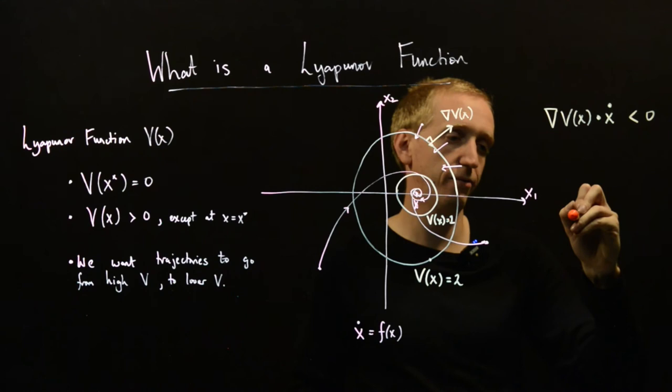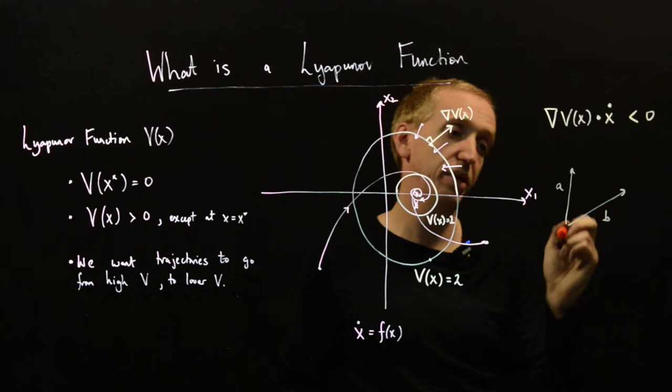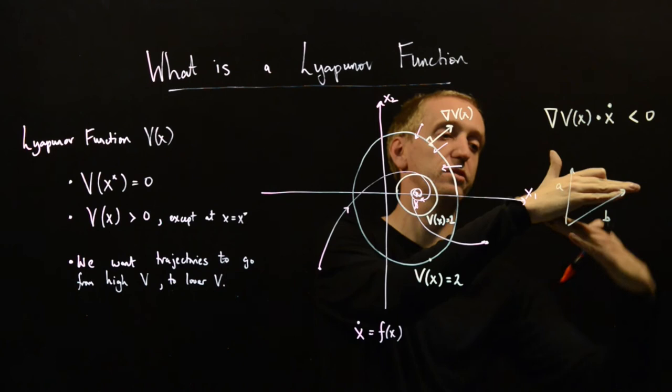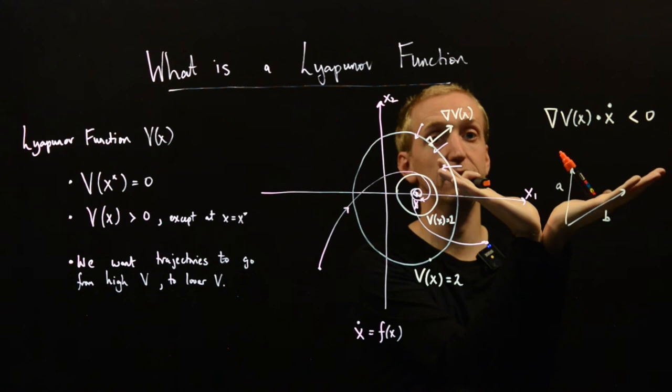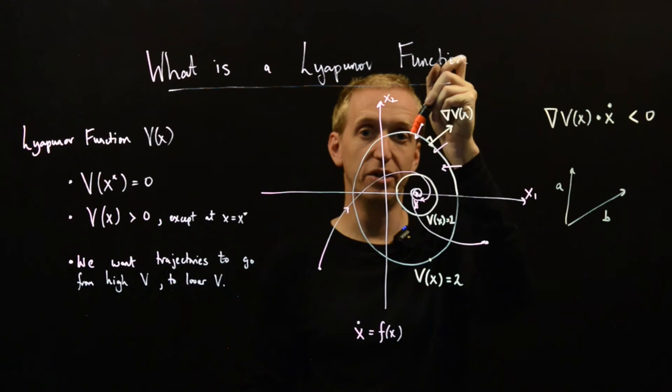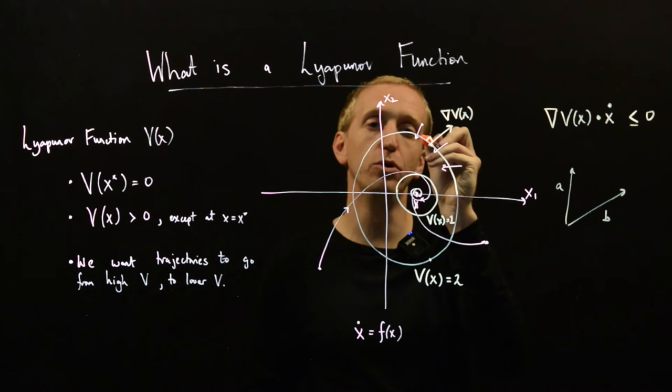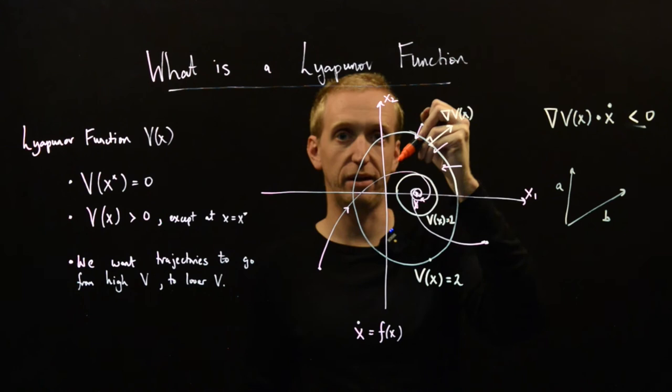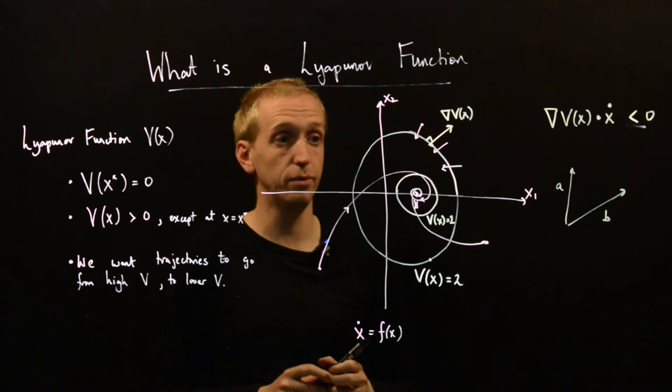is negative. So if you remember, if I have two vectors, a and b, the dot product will be positive, as long as a and b are just at most 90 degrees apart. But by the time it gets more than 90, it becomes negative. So requiring this to become negative just means that it's pointing strictly inside. And similarly, if it was just less than or equal to, we could be moving along a contour of constant v. If it's strict, then we're moving strictly inside. And this is how Lyapunov functions work.